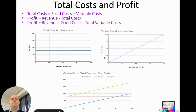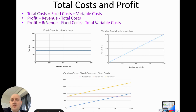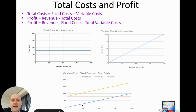We can now bring these together with some formulas. Total cost equals fixed cost plus variable cost — all costs are either fixed or variable. Profit equals revenue minus total cost, which we can also express as revenue minus fixed cost minus total variable cost. On a diagram, we stack the fixed cost line (red) and variable cost line (blue) to get the total cost line (yellow).